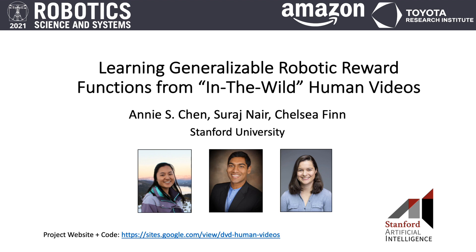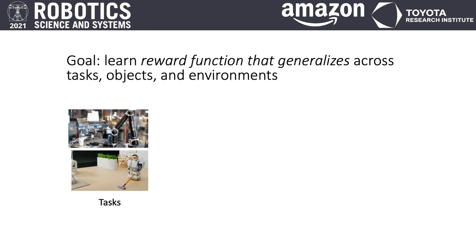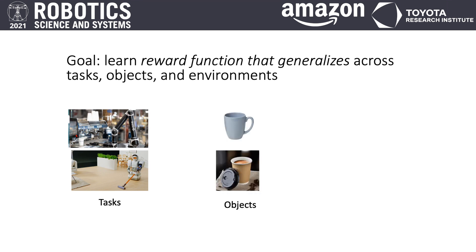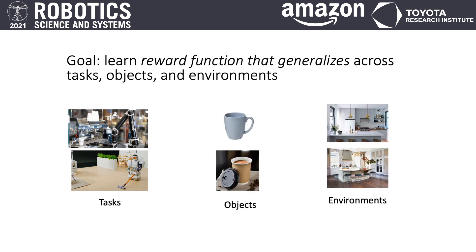Hi, my name is Annie Chen and today I'm presenting learning generalizable robotic reward functions from in-the-wild human videos. This is joint work with Suraj Nair and Chelsea Finn at Stanford University. Our goal is to learn general purpose reward functions which are capable of generalizing to new tasks, objects, and environments.